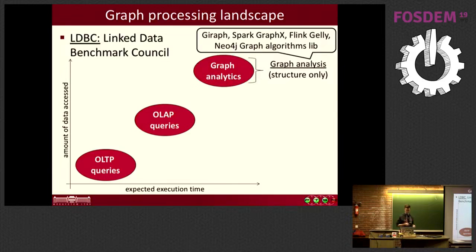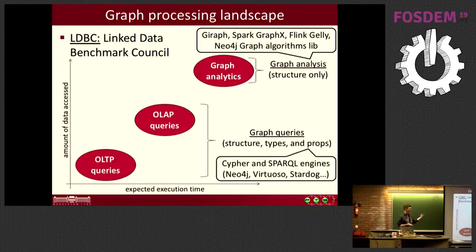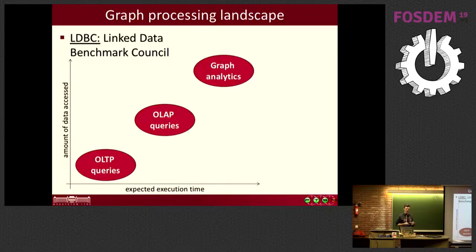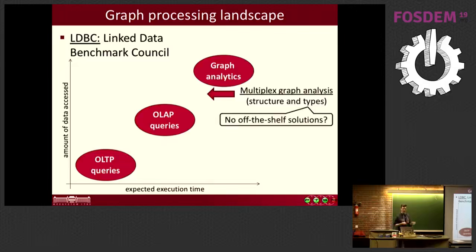The bottom half is also well covered — for graph queries using structure, node types, and properties, you can use languages like Cypher and SPARQL with tools like Neo4j, Virtuoso, and Stardog. But our work fits somewhere in between: it uses graph structure and some type information, but no properties. It seems there are no off-the-shelf solutions to tackle these sorts of computations.